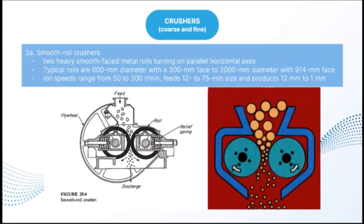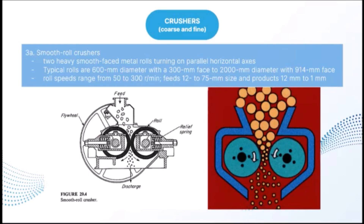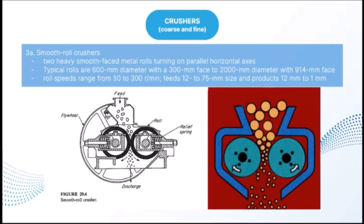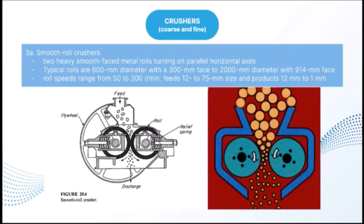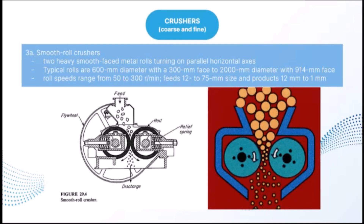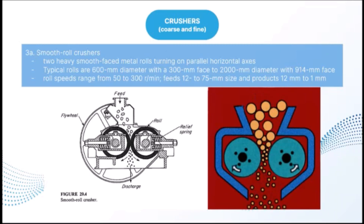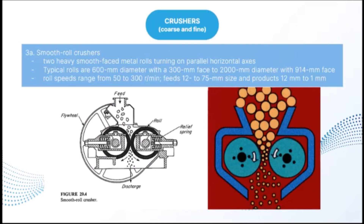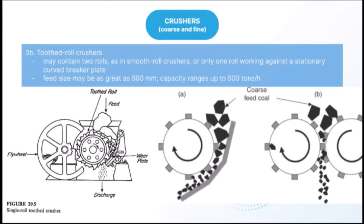Smooth roll crushers have two heavy smooth-faced metal rolls turning on parallel horizontal axes. Particles of feed caught between the rolls are broken in compression and drop out below. The rolls turn toward each other at the same speed, with relatively narrow faces and large diameter to nip moderately large lumps. Typical rolls range from 600 mm diameter with a 300 mm face to 2,000 mm diameter with a 914 mm face. Roll speeds range from 50 to 300 rpm. Smooth roll crushers are secondary crushers with feeds of 12–75 mm and products of 12 mm down to about 1 mm.